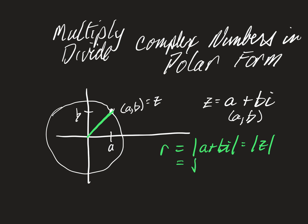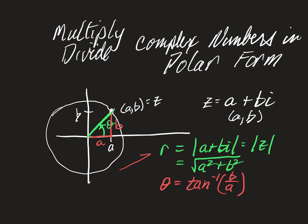The modulus is the square root of a squared plus b squared — that's our radius. The angle we want is theta, and we can get that angle by looking at a and b, the horizontal and vertical components. Theta is equal to the inverse tangent of b over a — opposite over adjacent. These are the same conversion formulas we use to convert rectangular to polar and polar to rectangular.